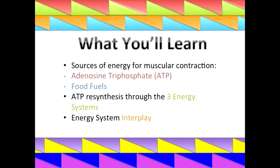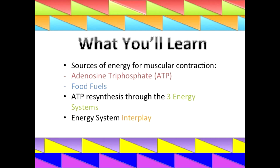We'll be looking at sources of energy for muscular contraction, specifically the roles of adenosine triphosphate and the food fuels. We'll also look at ATP resynthesis through the three energy systems and how the systems work together. Put simply, when we eat food it provides us with energy to refuel our three energy systems, which we'll discuss later on.